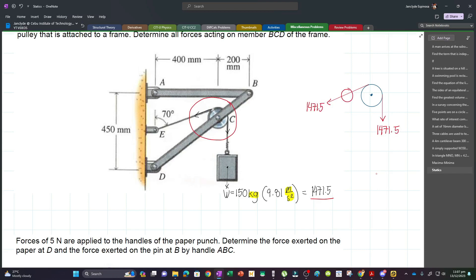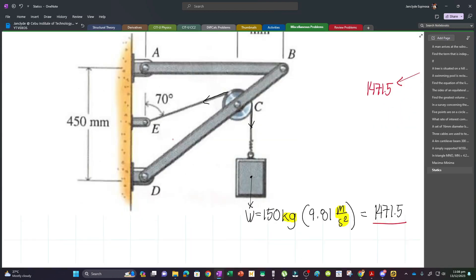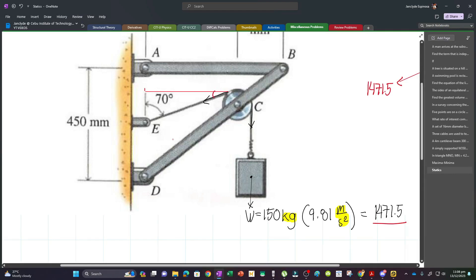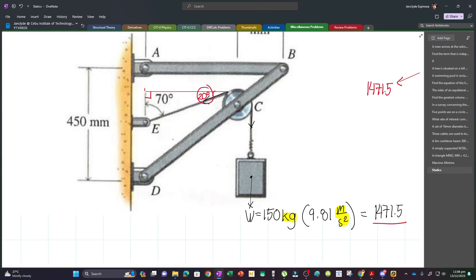The angle is 70 degrees. If I extend a line going here, a triangle is formed. This is 70, and it's a right triangle, so this is 90. That means this angle is 20 degrees.